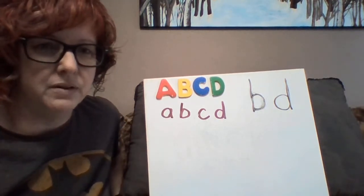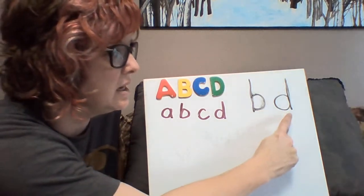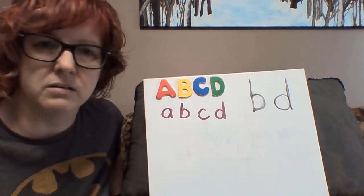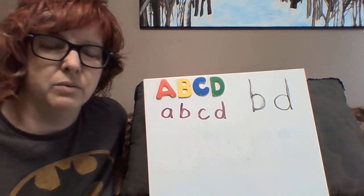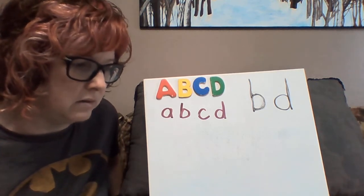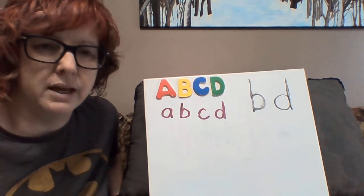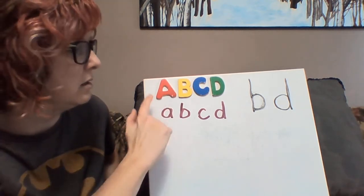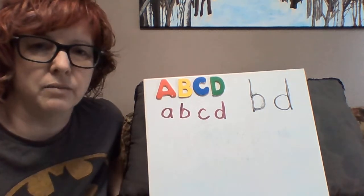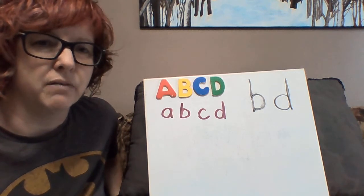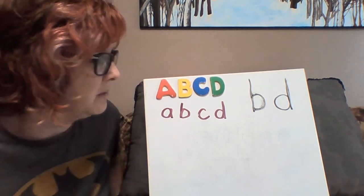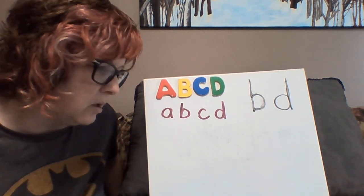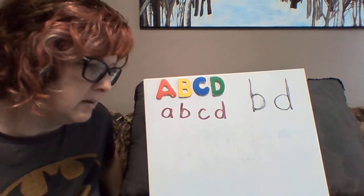Today we're going to talk about the difference between lowercase b and lowercase d. It's a fairly common occurrence for kids to get them mixed up — it's totally normal at this stage. We're going to give three different strategies for trying to remember which one is which. In our uppercase letters, B and D are quite easy to tell apart by the number of bumps, but when we get to lowercase they both look very much the same — they both have a stick and they both have a circle.